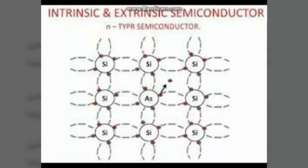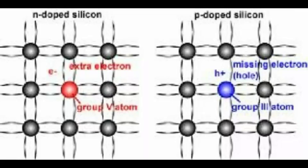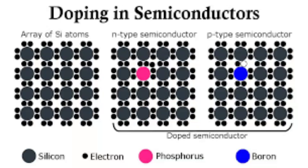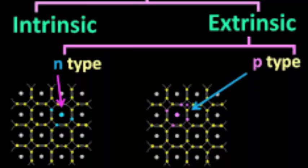Now the next part is extrinsic semiconductor. The extrinsic semiconductor has little current conduction capability at room temperature. So to be useful in electronic devices, the pure semiconductor must be altered so as to significantly increase its conducting properties. This is achieved by adding a small amount of suitable impurity to a semiconductor — it is then called an impurity or extrinsic semiconductor. The process of adding impurities to a semiconductor is known as doping. Generally one impurity atom is added for 10^8 atoms of semiconductor. Depending upon the type of impurity added, extrinsic semiconductors are classified into two types: N-type and P-type.